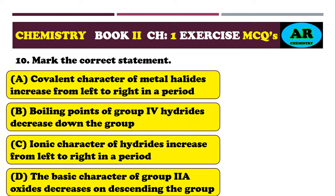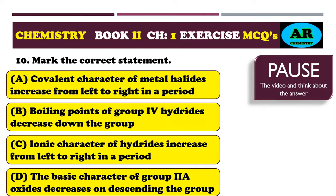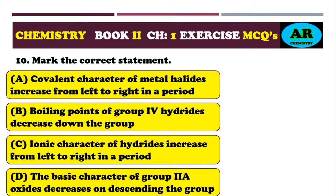MCQ 10: mark the correct statement. Option alpha: covalent character of metal halides increases from left to right in a period. Option beta: boiling point of group 4A hydrides decreases down the group. Option charlie: ionic character of hydrides increases from left to right in a period. Option delta: the basic character of group 2A oxides decreases on descending the group. The correct option is alpha.